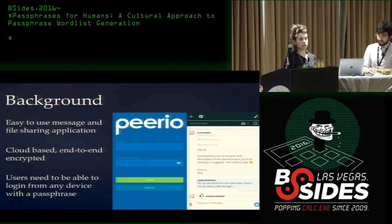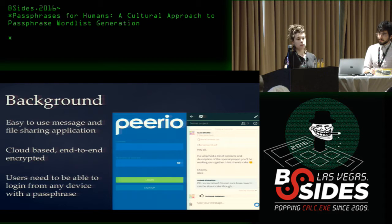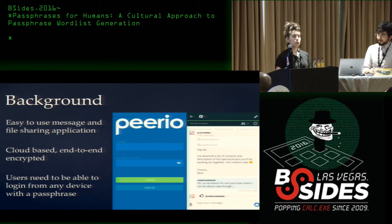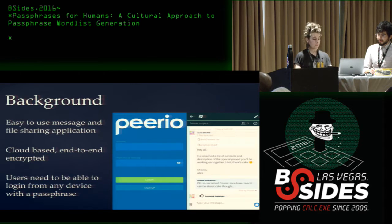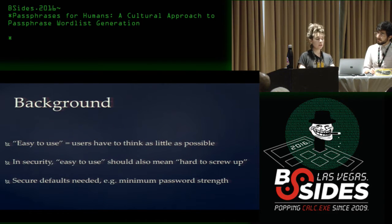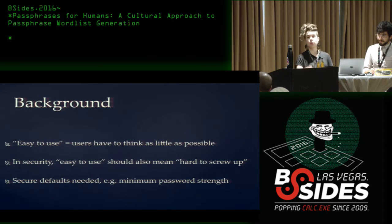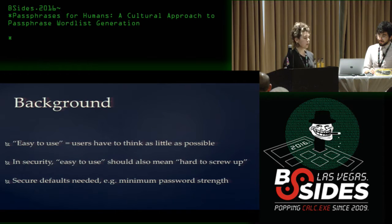For context on what the app is: Perio does easy-to-use message and file sharing with an emphasis on teams. It's cloud-based, everything is end-to-end encrypted, and users need to log in from any device on any platform with a passphrase. We derive the user's private key from the passphrase using Blake2s and scrypt. We never get the private keys, so if a user loses the passphrase, they're locked out. Passphrases are therefore a very important component of actually being able to use the software at all.